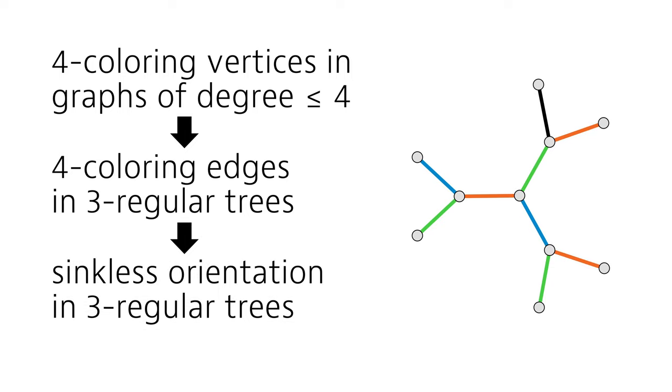But now this is something we could use to find a sinkless orientation. Let's put back active and passive nodes here, and then just pick two colors, like orange and blue, and orient them away from the active nodes.